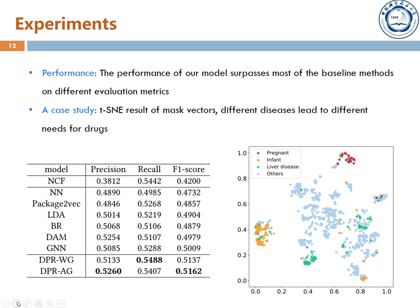To demonstrate the effectiveness of our drug package recommendation framework, we compared our models with all of the baselines, and the results are shown in the table. We find that the performance of our models surpasses most of the baseline models on different evaluation metrics, which clearly proves the effectiveness of our DPR framework based on package graph construction and message passing neural network. We randomly selected 1,000 patients and their corresponding mask vectors, and projected them into two-dimensional space with T-SNE. We further selected three patient groups — pregnant women, infants, and patients with liver disease — and the result shows that different groups have different special requirements for drug selection.